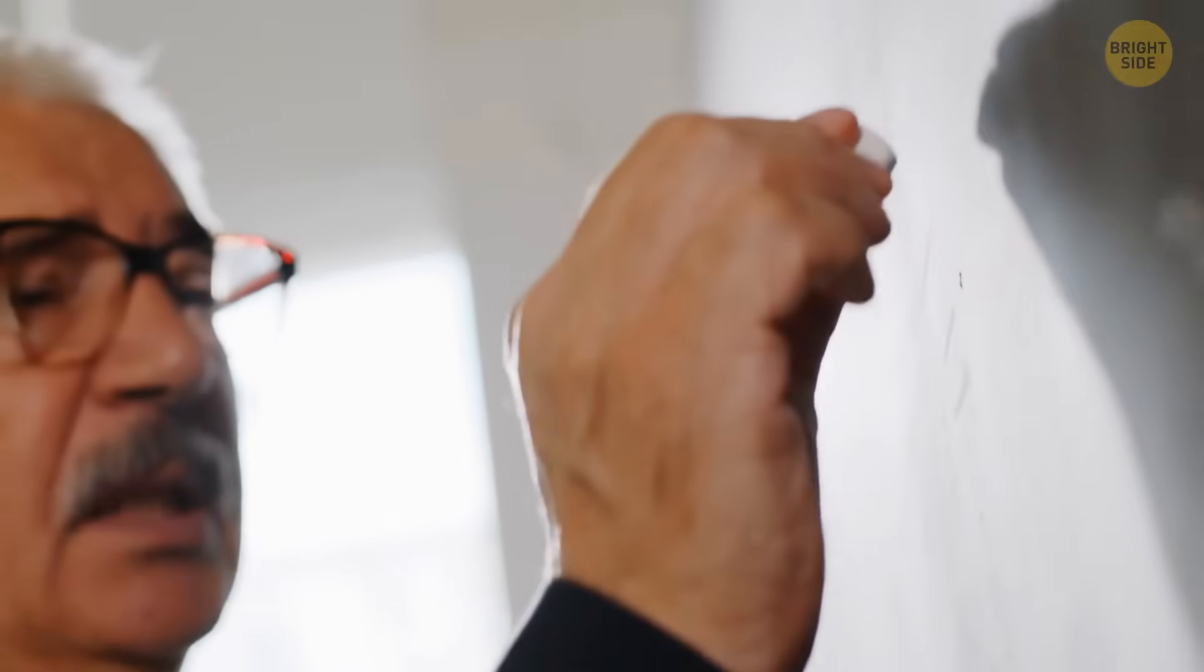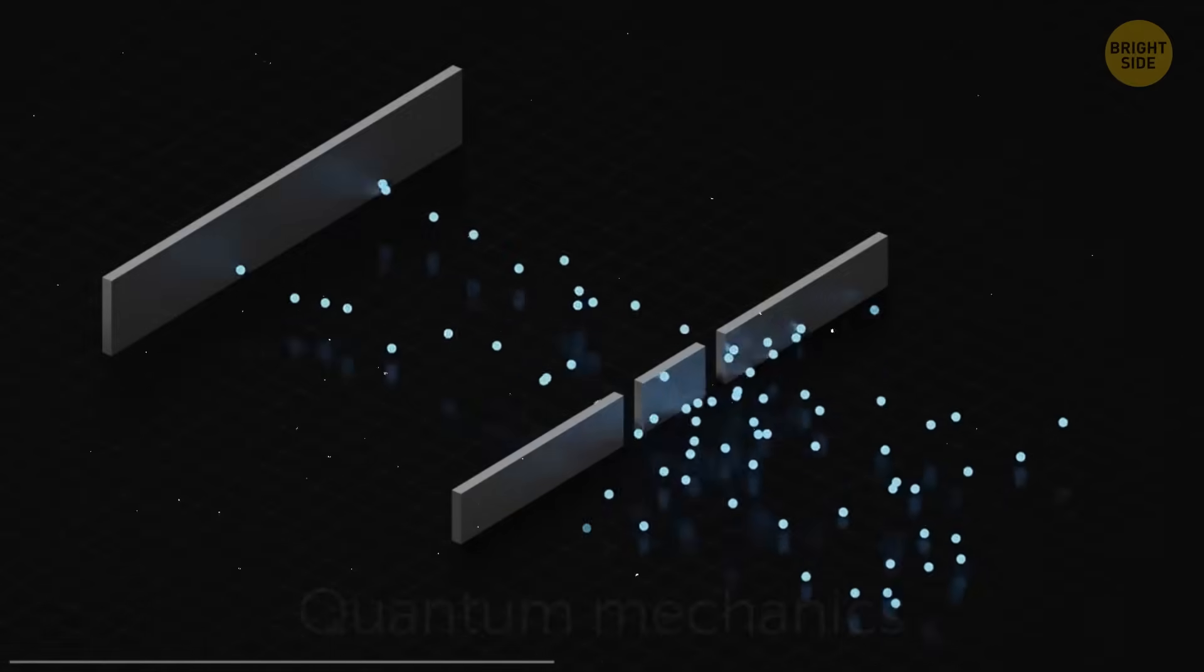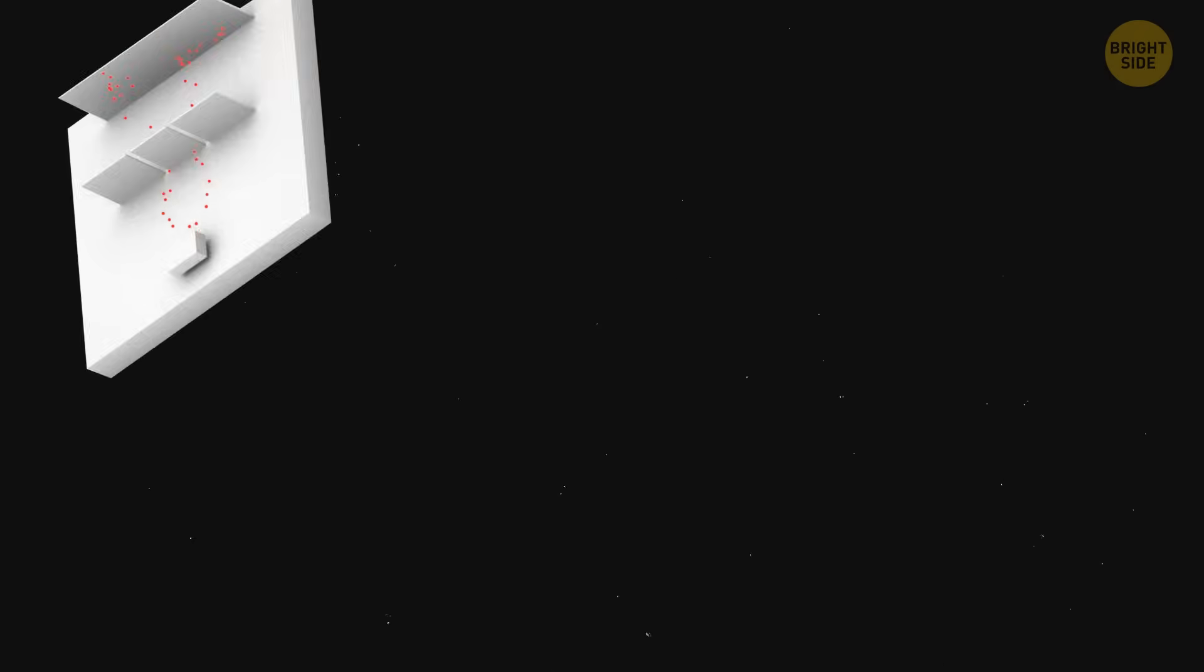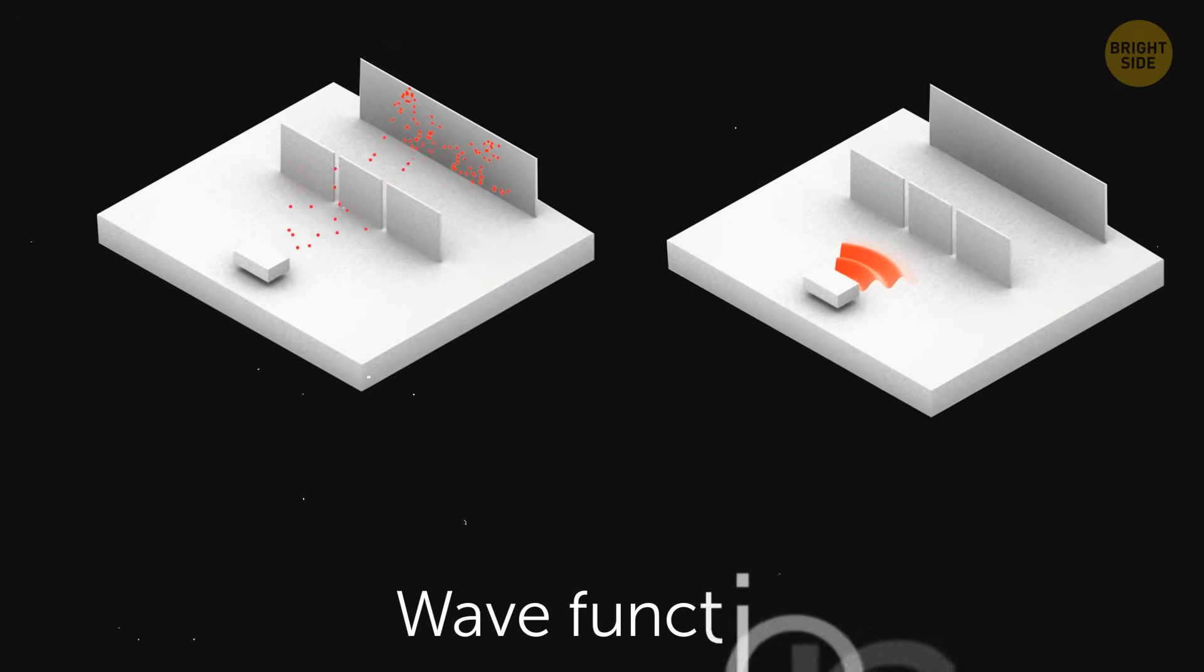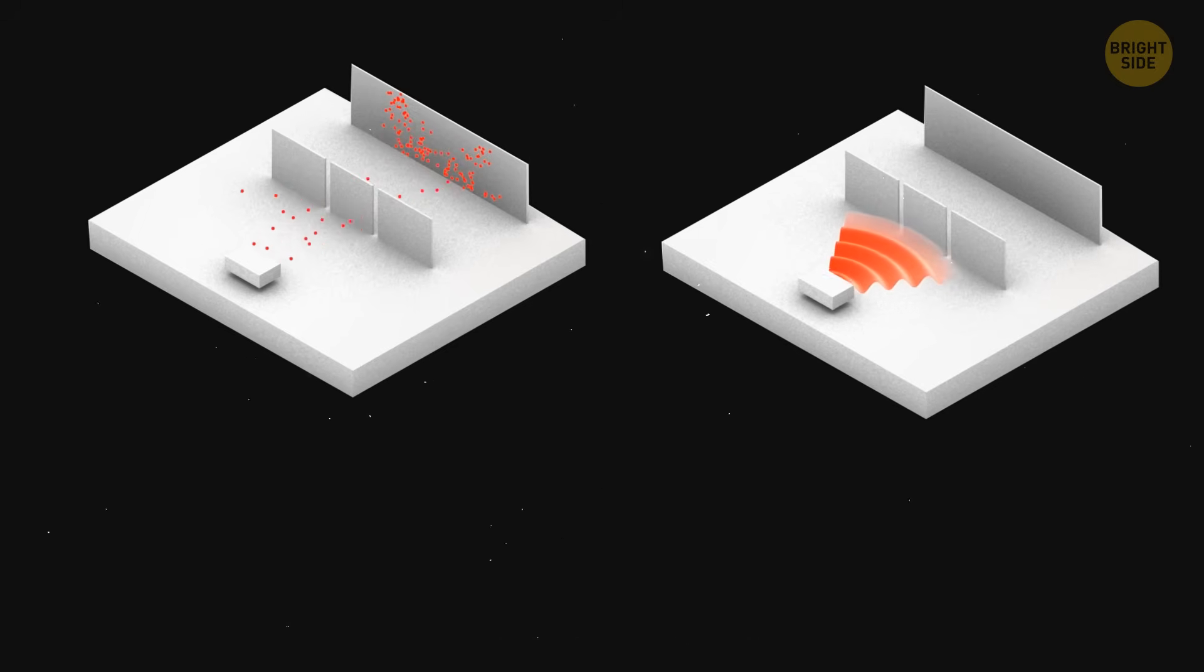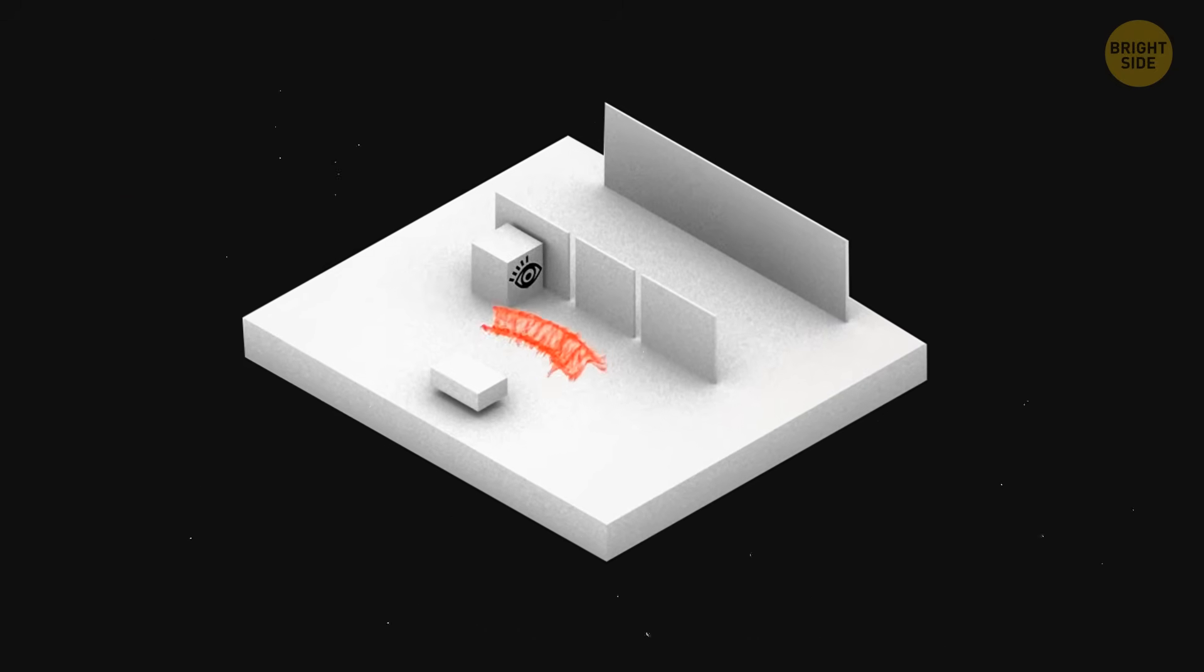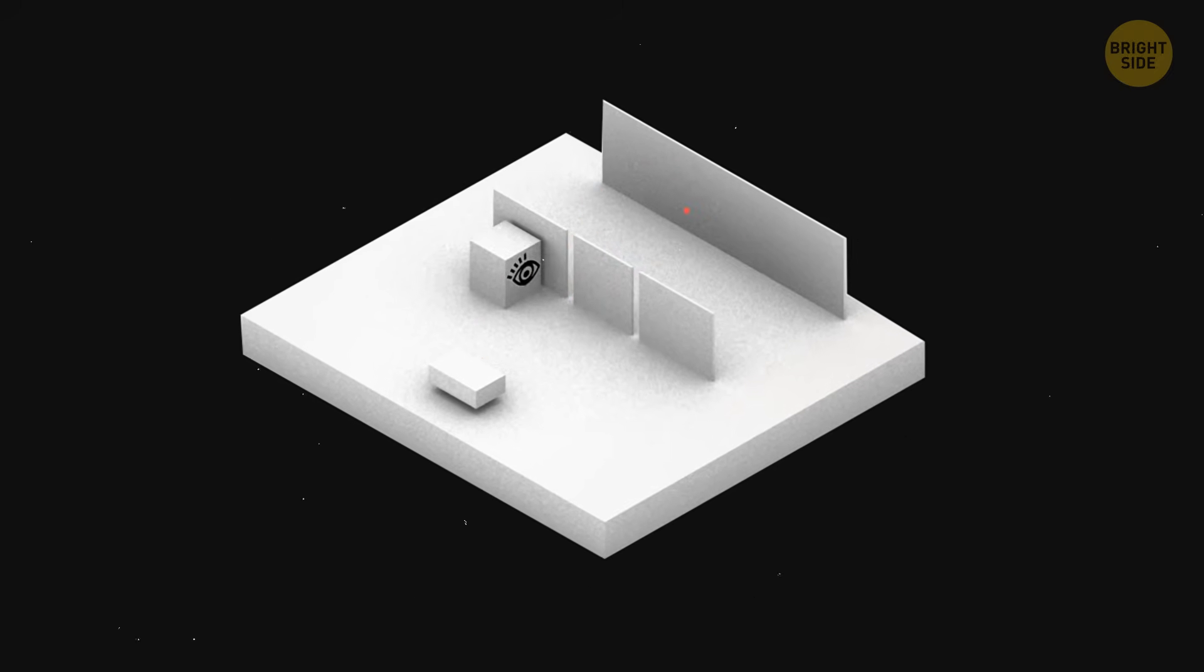Other super smart researchers out there are trying to connect parallel universes with quantum mechanics. Now, quantum mechanics is basically the fancy math behind teeny tiny particles. According to it, these particles can exist in multiple states all at once. They call it a wave function that holds all the crazy options. But here's the catch. When we observe these particles, we only see one outcome. It's like the universe keeps playing hide-and-seek with us.